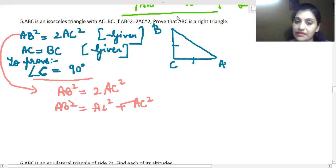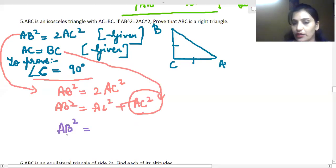Now, AC square is said to be equal to BC square. I will replace this with BC. Okay? So what I am getting is AB square is equal to AC square plus BC square.